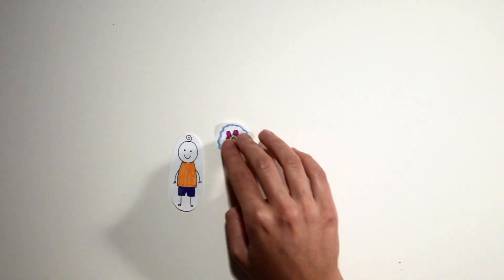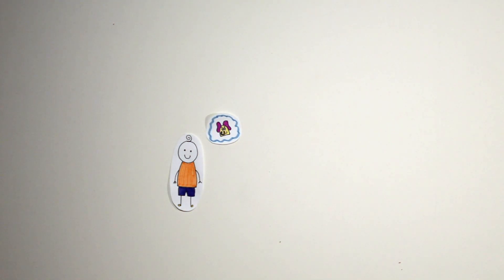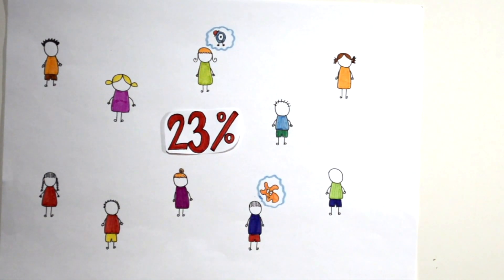Kyle is a little child and he has an imaginary companion. Kyle is not the only one. In fact, around 23% of the population have an imaginary companion, which is completely normal.